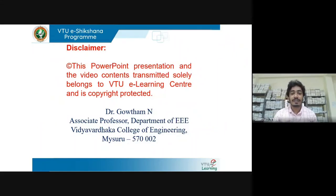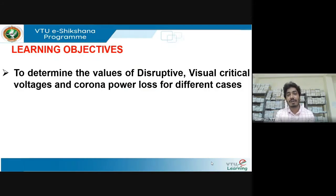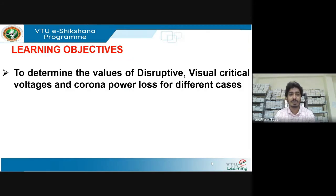Let's get started with the next session in transmission and distribution. In the last lecture, we had derived the expression for voltages like critical disruptive voltage, visual disruptive voltage, visual critical voltage, corona power loss. We also got to know the phenomenon of corona, the various factors that affect corona, and how it would affect the performance of the transmission line and some measures to minimize the effect of corona.